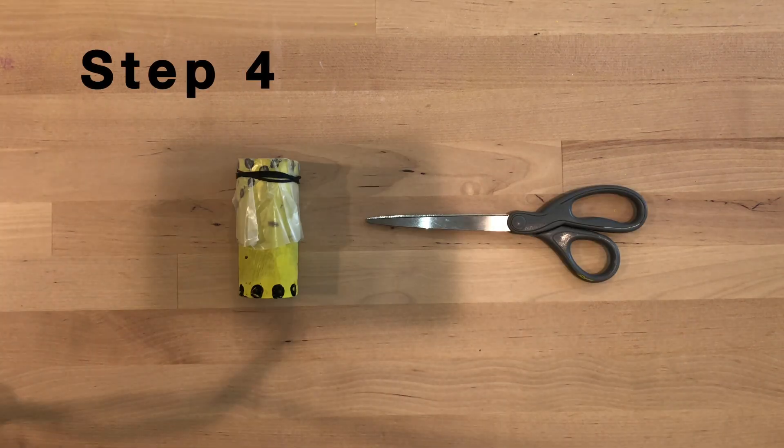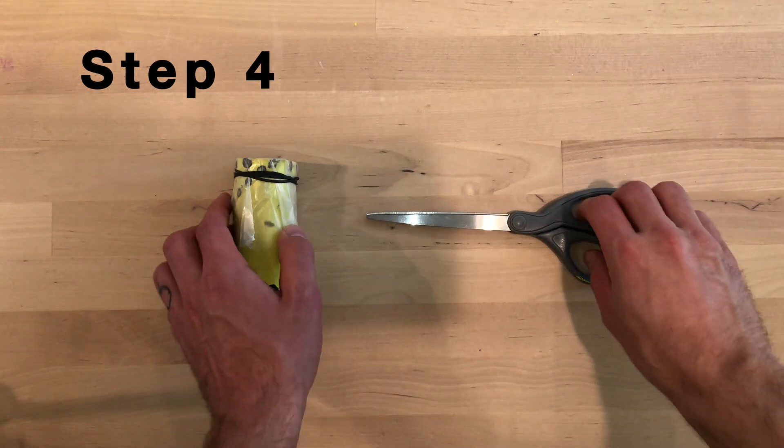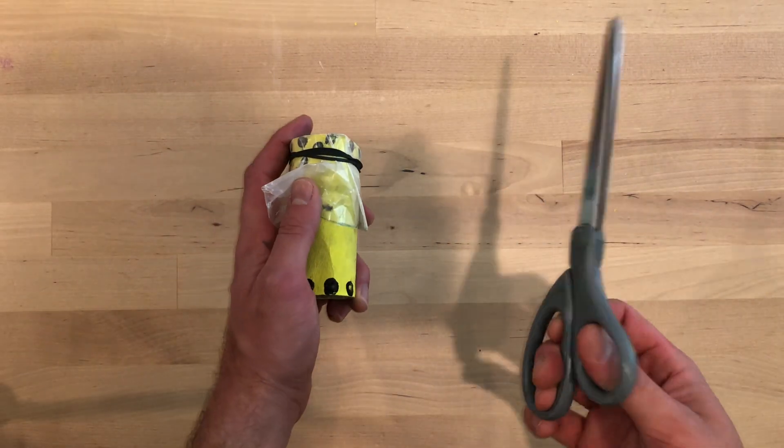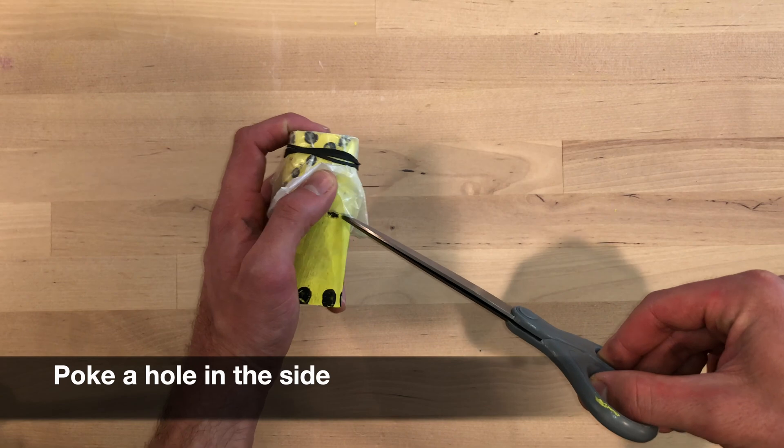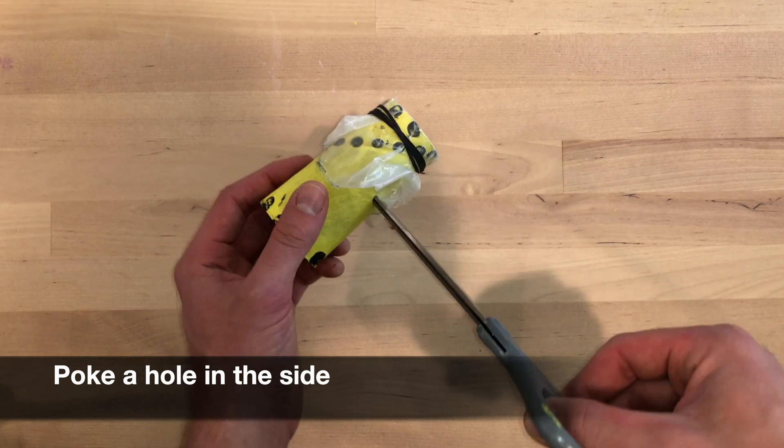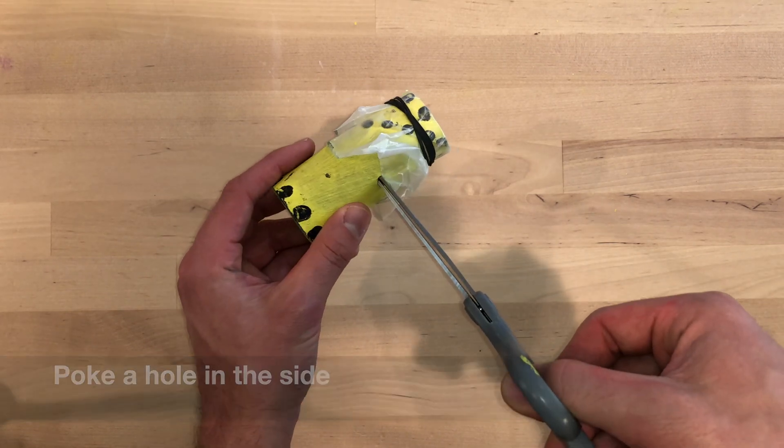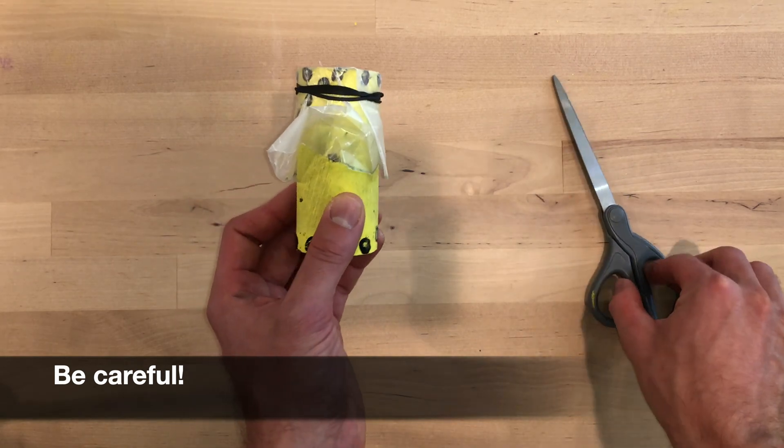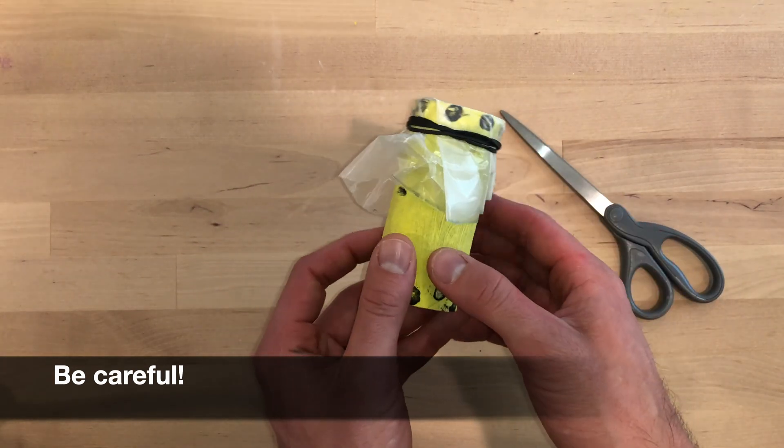Step 4. Now we need to take our scissors and safely put a hole in the side of our kazoo to allow a small amount of air to escape when we are playing. Please be very careful during this step. If you need help, please ask an adult.